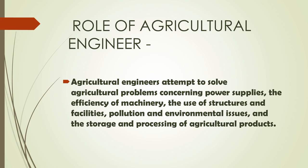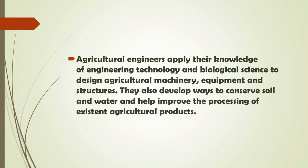Role of the agricultural engineer: Agricultural engineers attempt to solve agricultural problems concerning power supplies, the efficiency of machines, the use of structures and facilities, pollution and environmental issues, and the storage and processing of agricultural products. Agricultural engineers apply their knowledge of engineering, technology, and biological science to design agricultural machinery, equipment, and structures. They also develop ways to conserve soil and water and help improve the processing of existing agricultural products.